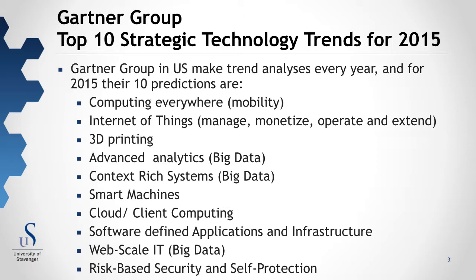Third is 3D printing. Fourth is advanced analytics, which is big data covered in module 5. Fifth is the context-rich system, also connected to big data in module 5. Sixth is smart machines, which can be seen as part of the internet of things. Seventh is cloud and client computing from module 5. Eighth is software-defined application infrastructure, connected with module 5, big data, cloud computing and the internet of things. Ninth is web-scale IT, also connected to big data, cloud computing and internet of things. And the tenth is risk-based security and self-protection.